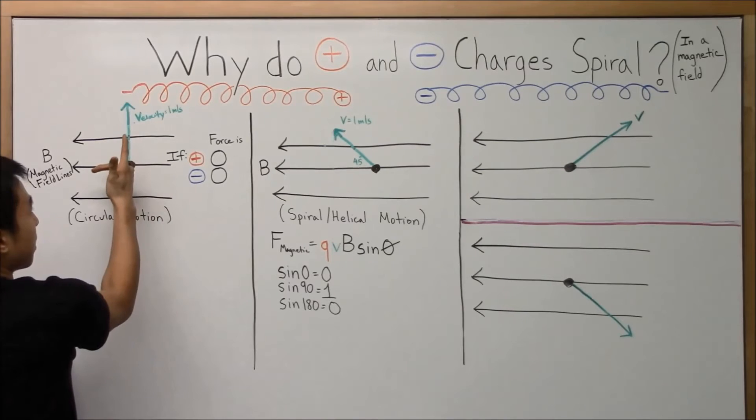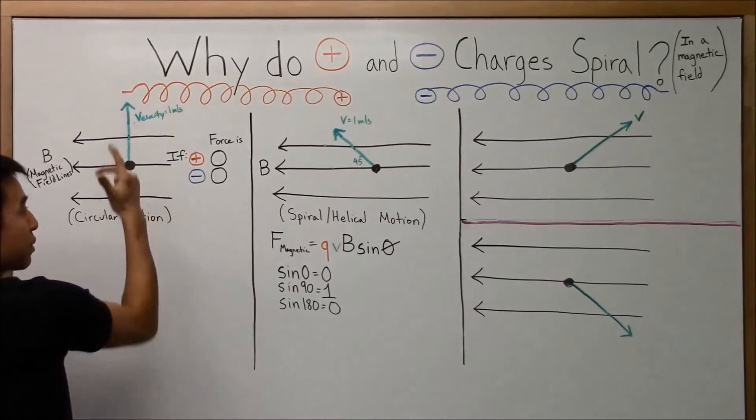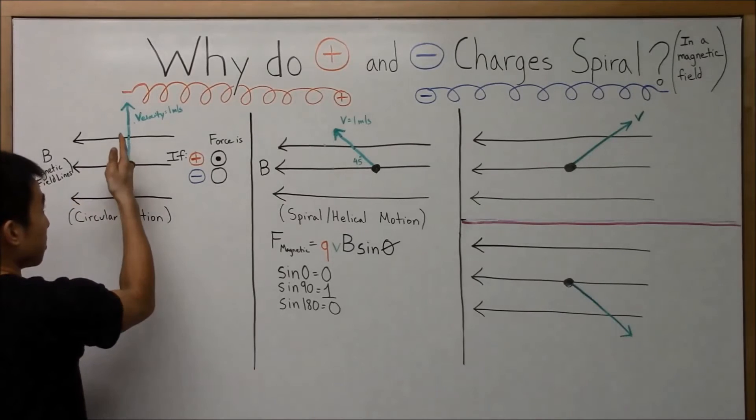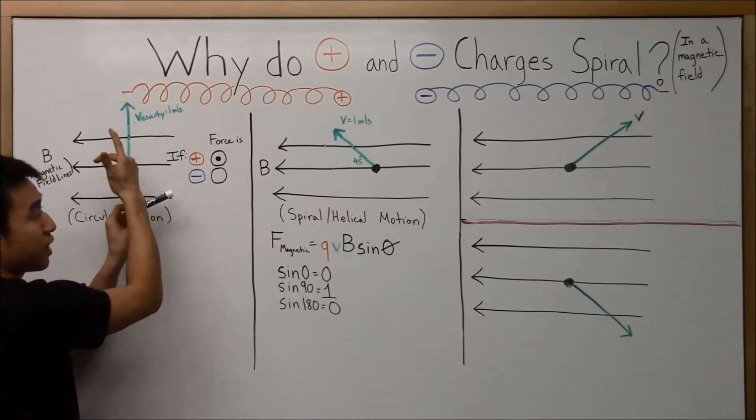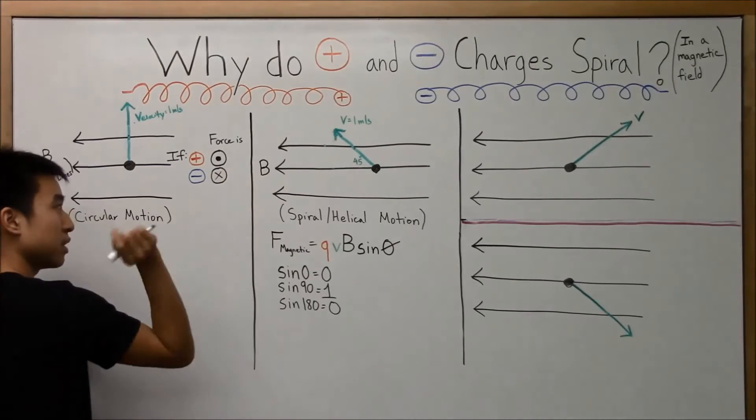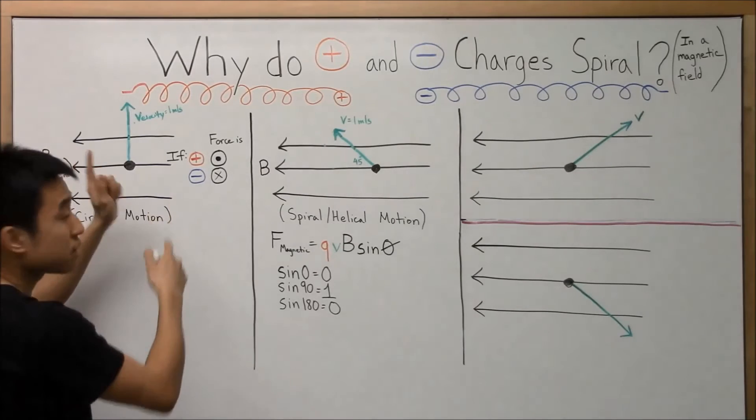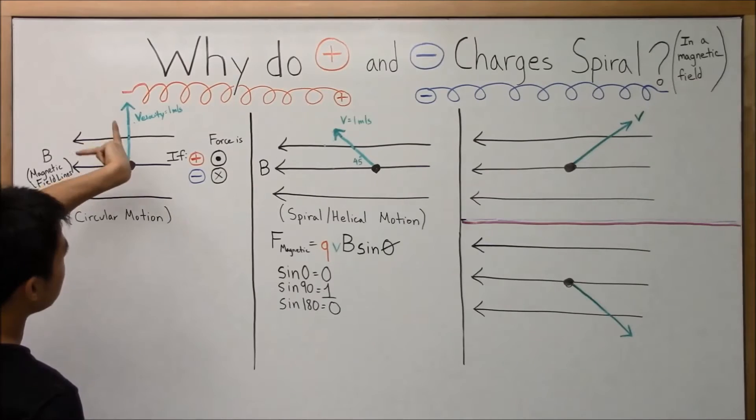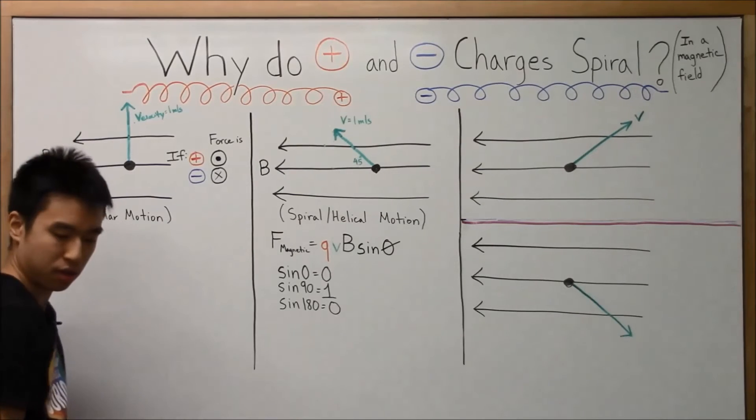So, right-hand rule, velocity is up, field is to the left, my thumb is the force, so the force that a positive charge feels is out of the board. Here we go. And then, for negative charge, right-hand rule, velocity, field, force, but your right-hand rule lies to you for negative charges. So, instead of out, it's actually going to be in. So, I'll use x to represent into the board. And you can also just use your left-hand if you want for negative charges. Velocity, field, and force. Okay? So, force is into the board. Velocity, field, force. Boom. Into the board. Okay.